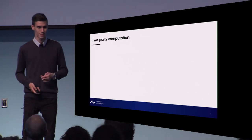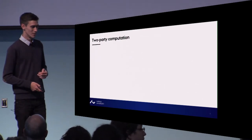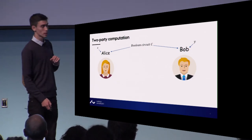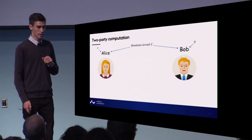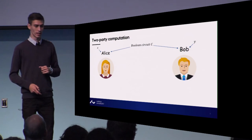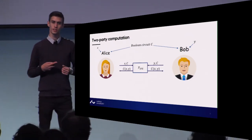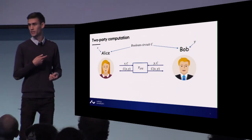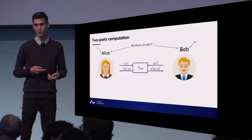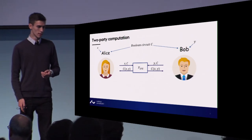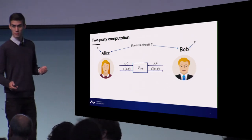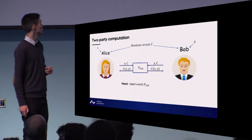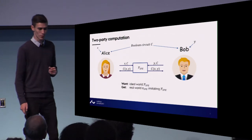Two-party computation is the setting we are talking about. Our setting is special here because we only consider Boolean circuits. Alice and Bob each have an input X and Y, and they want to evaluate some circuit C on their inputs such that the only thing they learn is the evaluation of the circuit on their inputs.